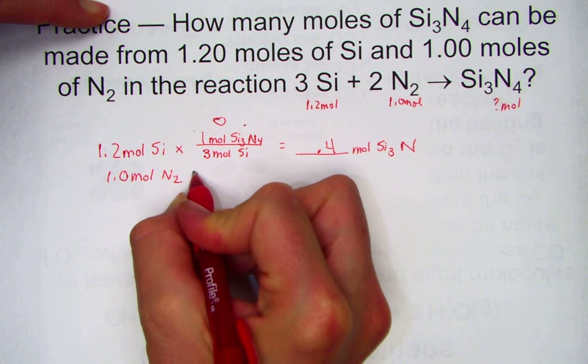There was a vocab word just on the previous slide. It was called the theoretical yield. But I also have used the term maximum yield.